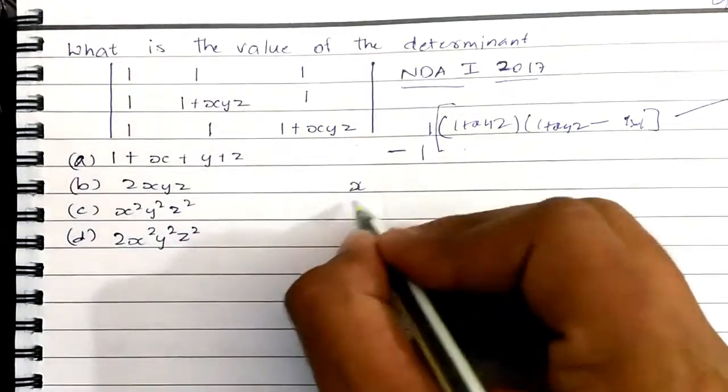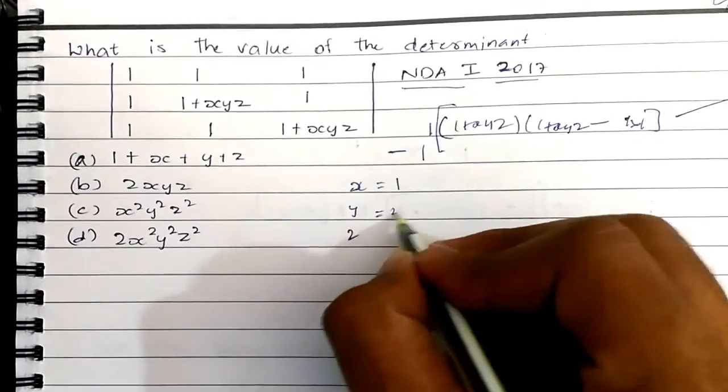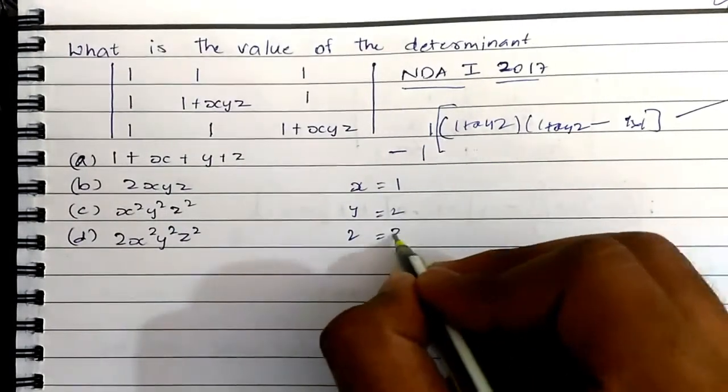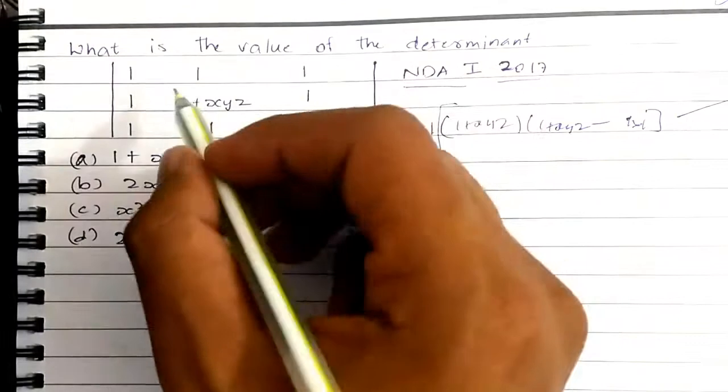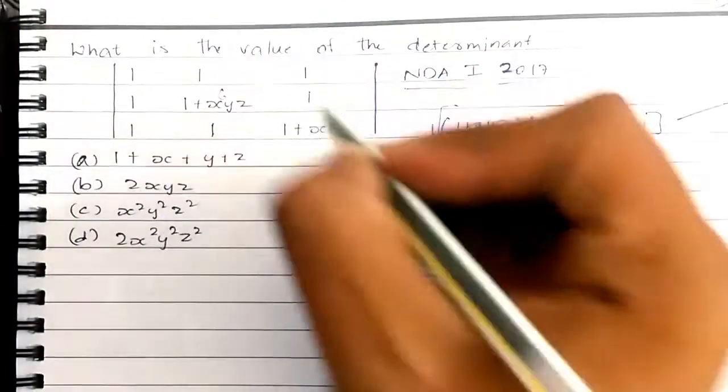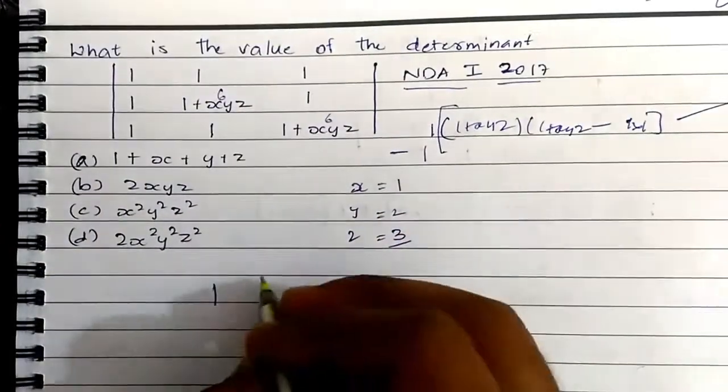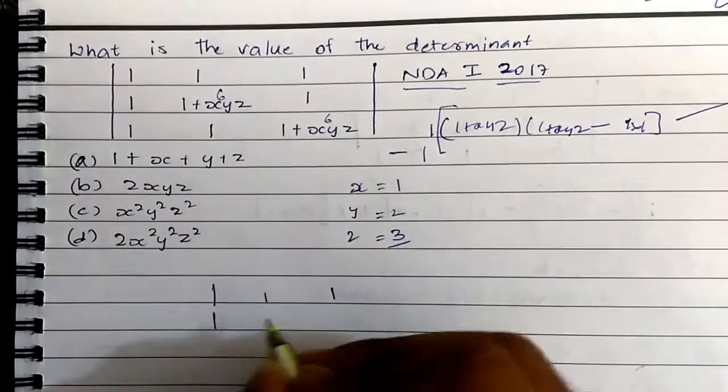Take some arbitrary values for x, y, z. So I'll take 1 for x and 2 for y, and for z I'll take 3. Replace those values here, so then it'll become xyz equals 6, and here also becomes 6. So it is a matrix of now 1, 1, 1, 1, 7, 1, 1, 1, 7.